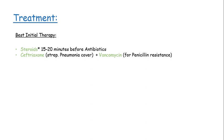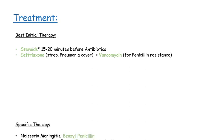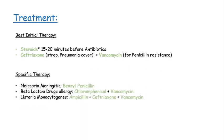Empirical therapy consists of ceftriaxone and vancomycin. Ceftriaxone is given for Streptococcus pneumoniae coverage — the overall most common organism — while vancomycin is given for penicillin-resistant strains.